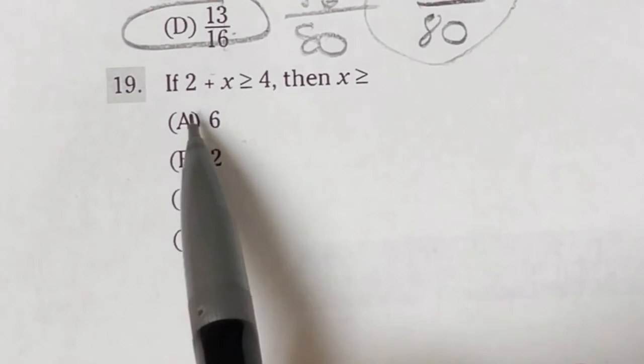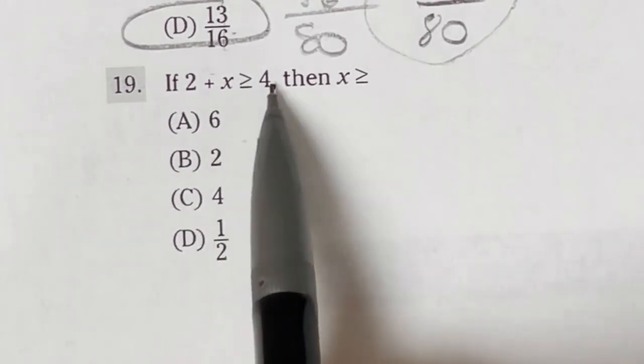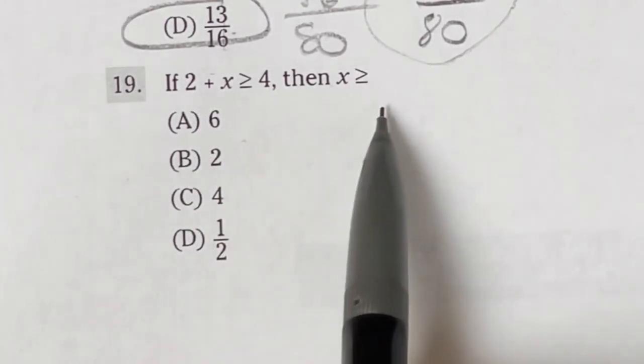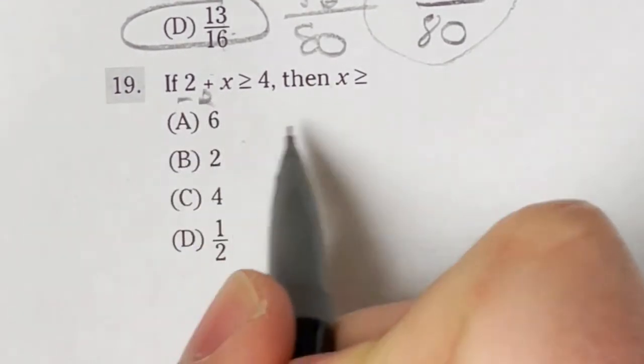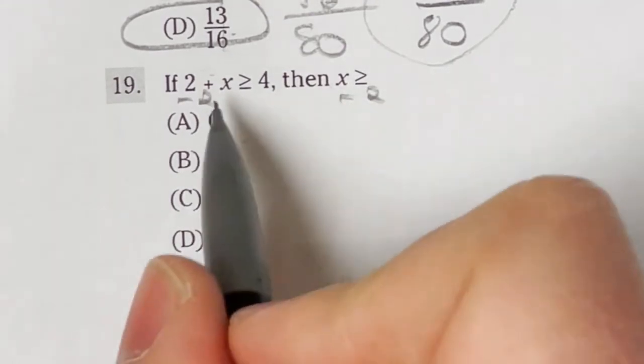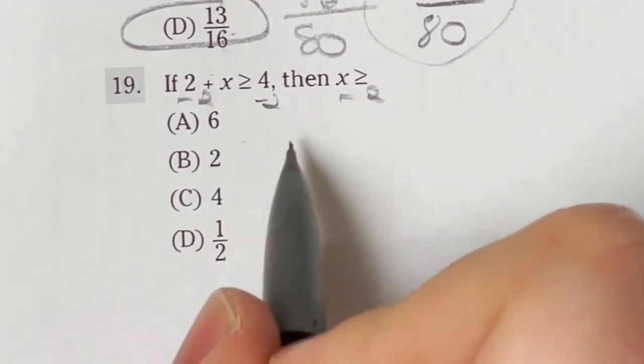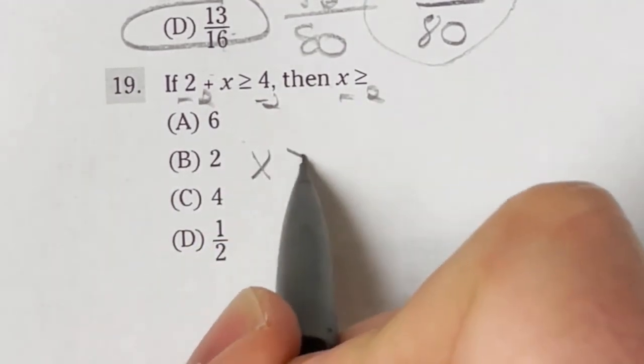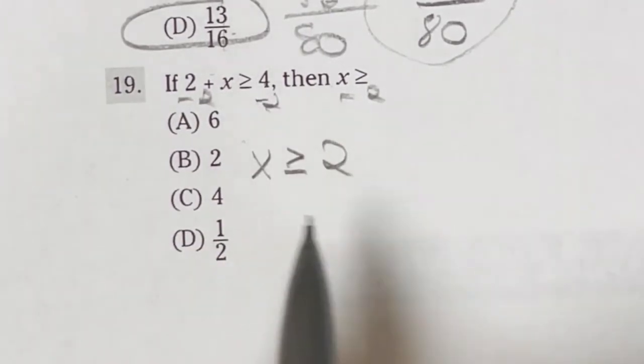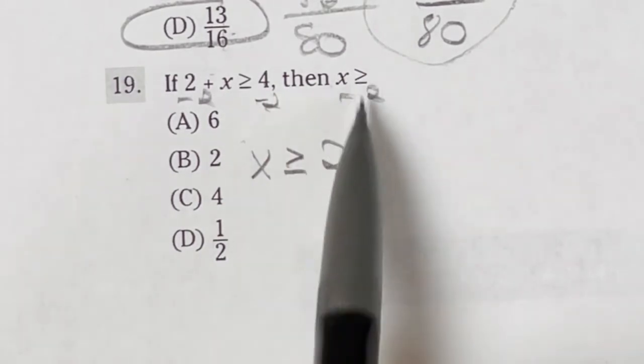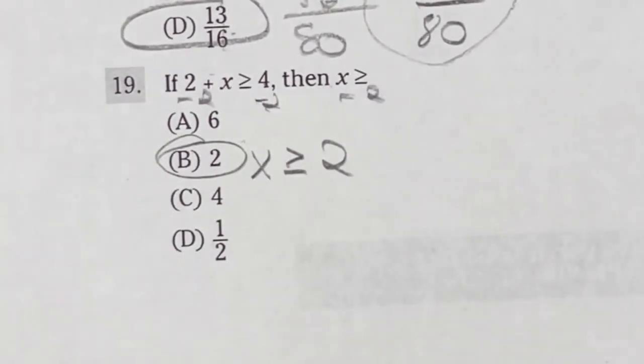Looking at number 19, it says if 2 plus x is greater than or equal to 4, then x is greater than or equal to what? This is solving an inequality. And you can treat it the same way as an equation. So I'm just going to subtract 2 from both sides. And that's going to end up giving me x is greater than or equal to 4 minus 2 is 2. So if I'm looking at these, if this, then x must be greater than or equal to 2. Option B.